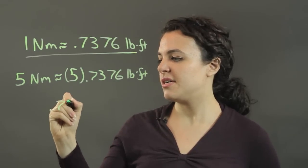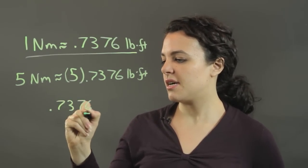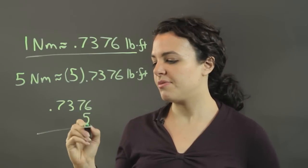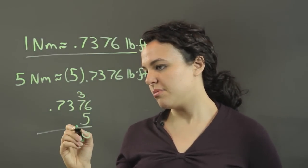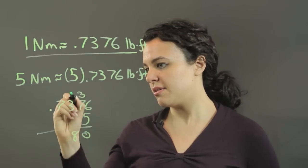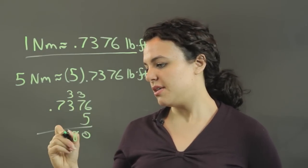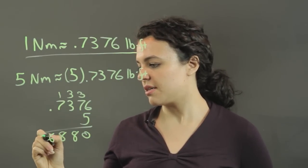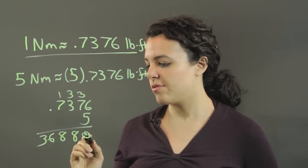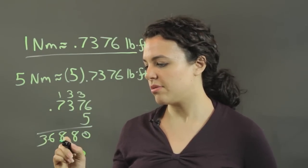If you have 0.7376 times 5, 6 times 5 is 30, 35 plus 3, 38, 15, 18, 35, 36, 1, 2, 3, 4, 1, 2, 3, 4.